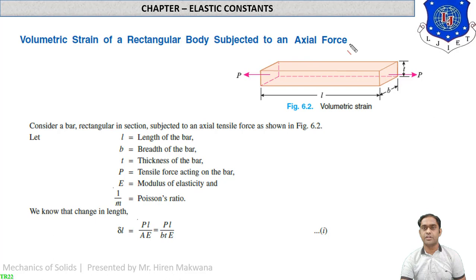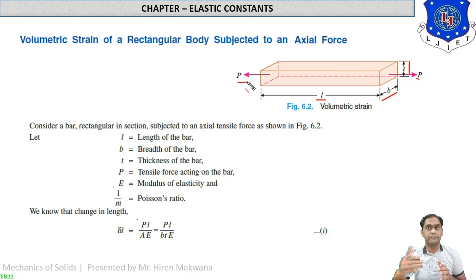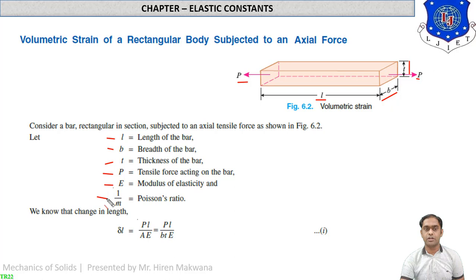Case one — volumetric strain of a rectangular body subjected to an axial force: the rectangular body has length l, width b, and thickness t, but the tensile force P is applied along the length direction only, with no force on the width or thickness faces. Notations: l, b, t are dimensions; P is tensile force; E is modulus of elasticity; and 1/m is Poisson's ratio.